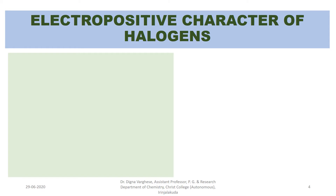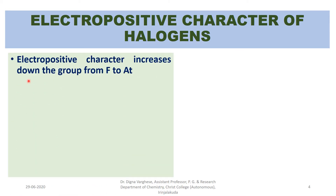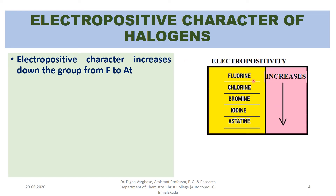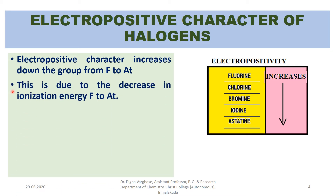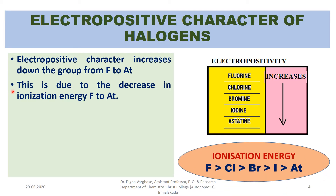Regarding the electropositive character of halogens: electropositive character increases down the group from fluorine to astatine. The electropositivity of the elements increases down the group, and the most electropositive element is astatine, while the least electropositive element is fluorine. This is due to the decrease in ionization energy of halogens from fluorine to astatine — ionization energy is higher for fluorine and least for astatine.